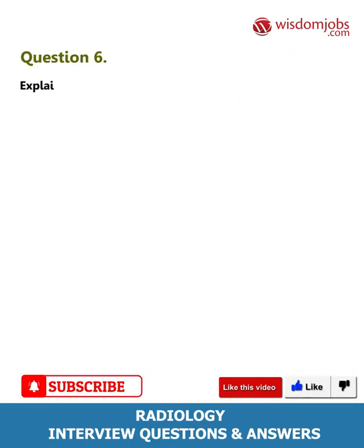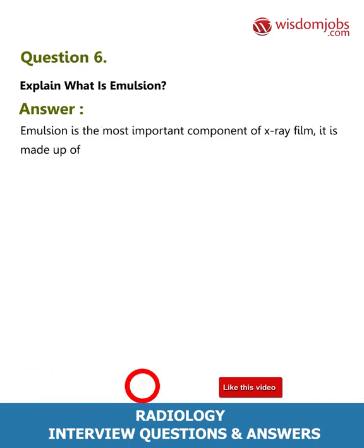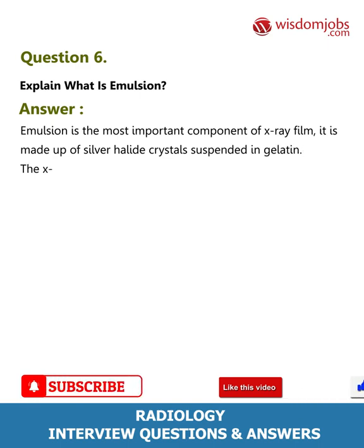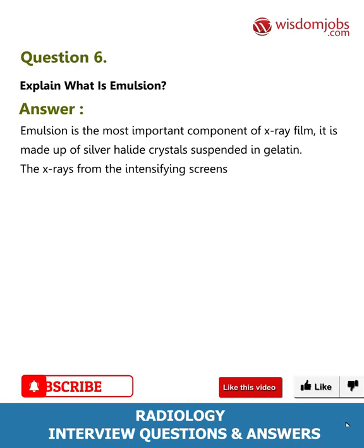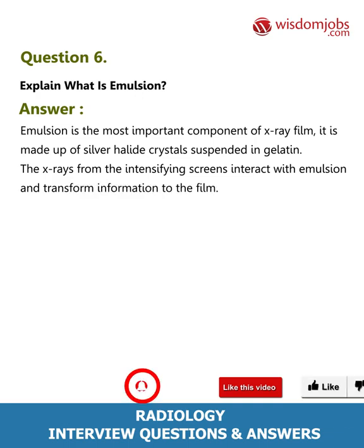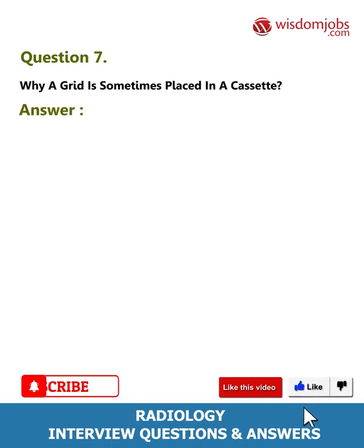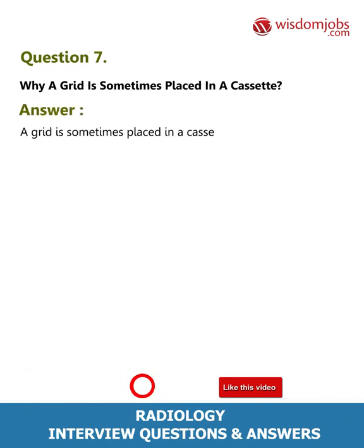Question 6: Explain what is emulsion. Answer: Emulsion is the most important component of x-ray film. It is made up of silver halide crystals suspended in gelatin. The x-rays from the intensifying screens interact with the emulsion and transform information to the film.